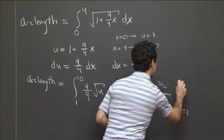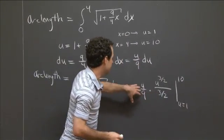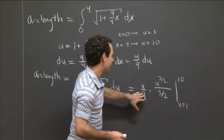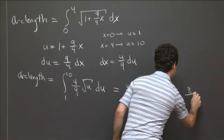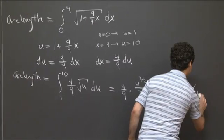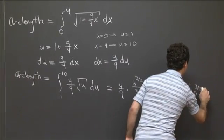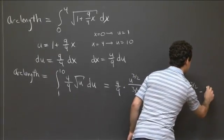between u equals 1 and u equals 10. OK, so I can divide here. So this becomes 8 27ths is the constant. So this is 8 over 27 times 10 to the 3 halves minus 1 to the 3 halves is just 1.